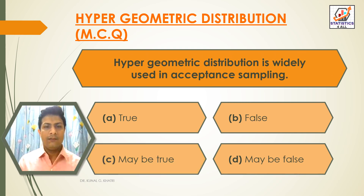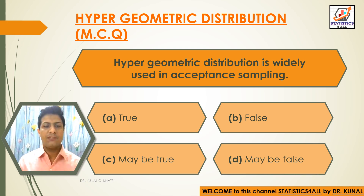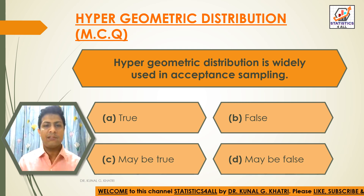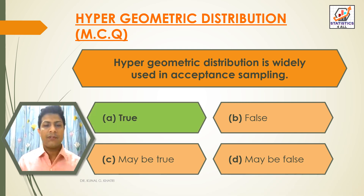Next question: Hypergeometric distribution is widely used in acceptance sampling. Option A: True, Option B: False, Option C: May Be True, Option D: May Be False. The answer is Option A — True. Hypergeometric distribution is widely used in acceptance sampling. That is true.